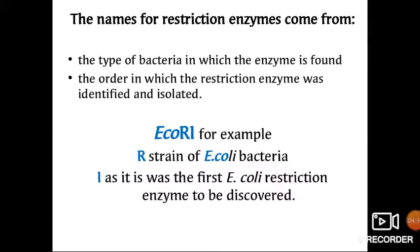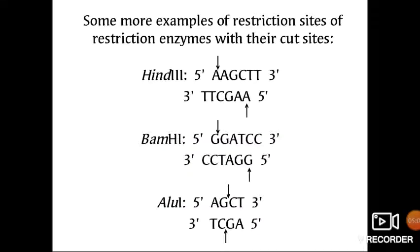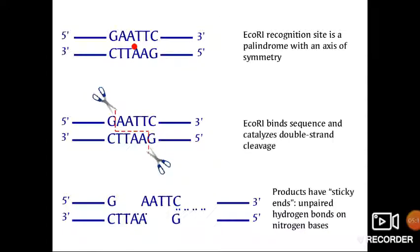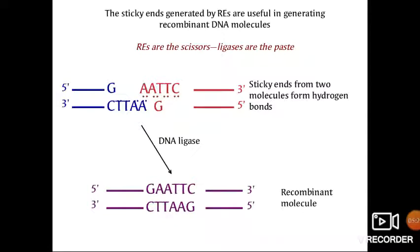Here are a few more examples of restriction enzymes and their recognition sequences. Remember that sticky ends will have two unpaired nitrogen bases, and when sticky ends are put together they are able to ligate themselves — those ends can be joined with the help of ligases. So restriction enzymes act as scissors and ligases act as paste.